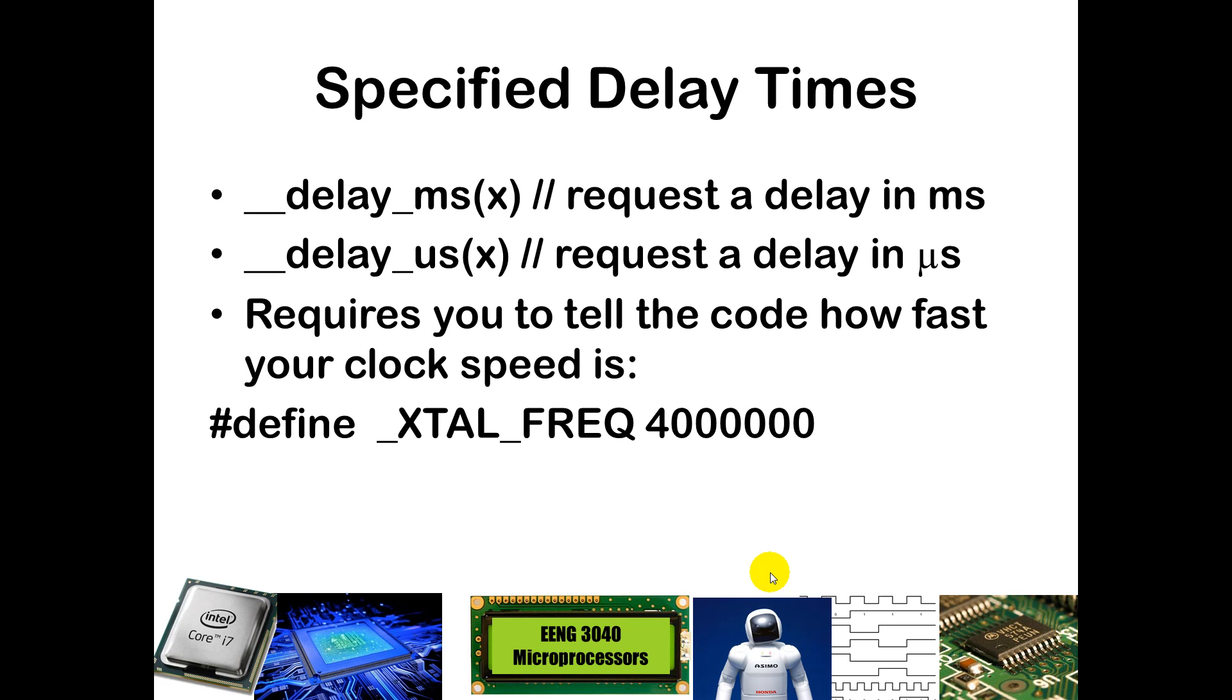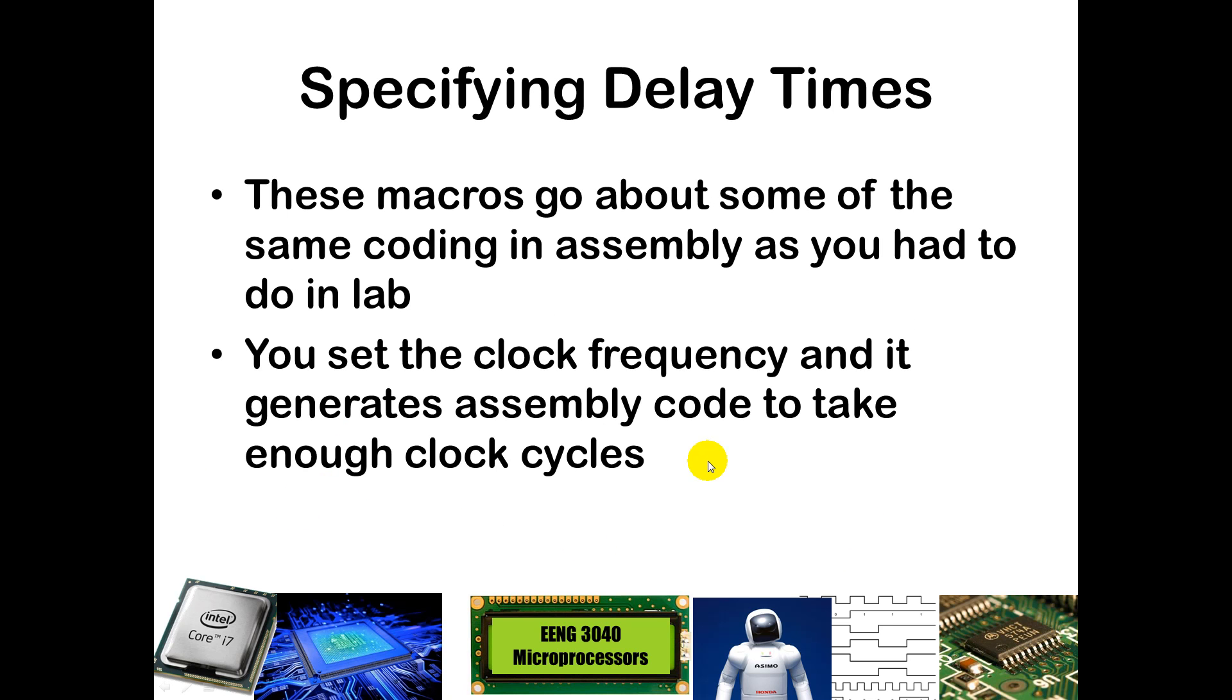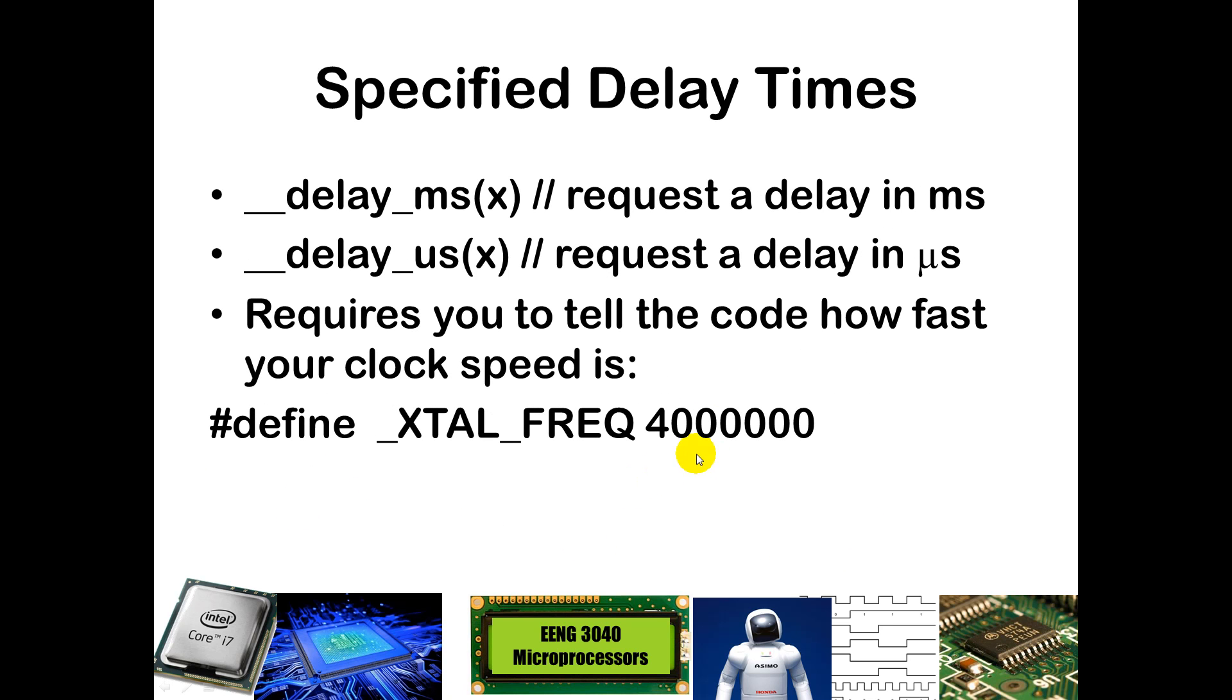If you're not worried about your clock cycles, and you just want a specific time, what you can do is you can define your crystal frequency. You can define your crystal frequency. In this case, we're using a 4 megahertz clock. So we would do define underscore XTAL underscore FREQ space 4 million. That says we're using a 4 megahertz clock, and that allows us to delay for a set number of either milliseconds or microseconds. So you can put in a number here, and now with one line, you can delay for however many milliseconds or microseconds you want.